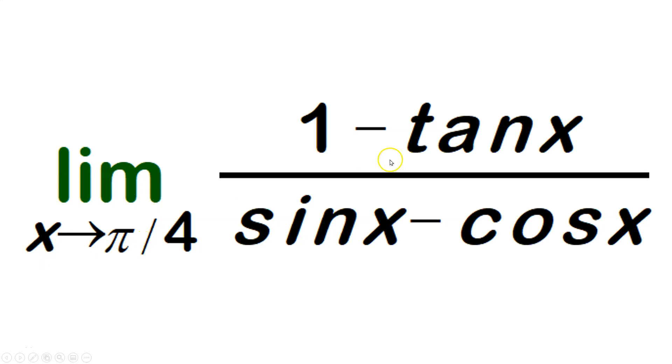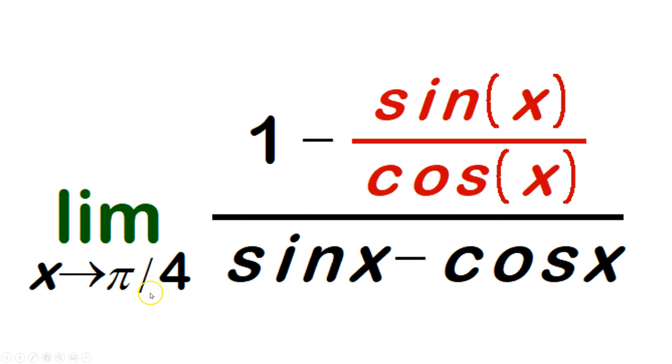Let's find the limit as x approaches π/4 of (1 - tan x)/(sin x - cos x). First, I'm going to write the limit as x approaches π/4 of 1, and then rewrite the tangent as sine over cosine, and copy the sine x minus cosine x in the denominator.